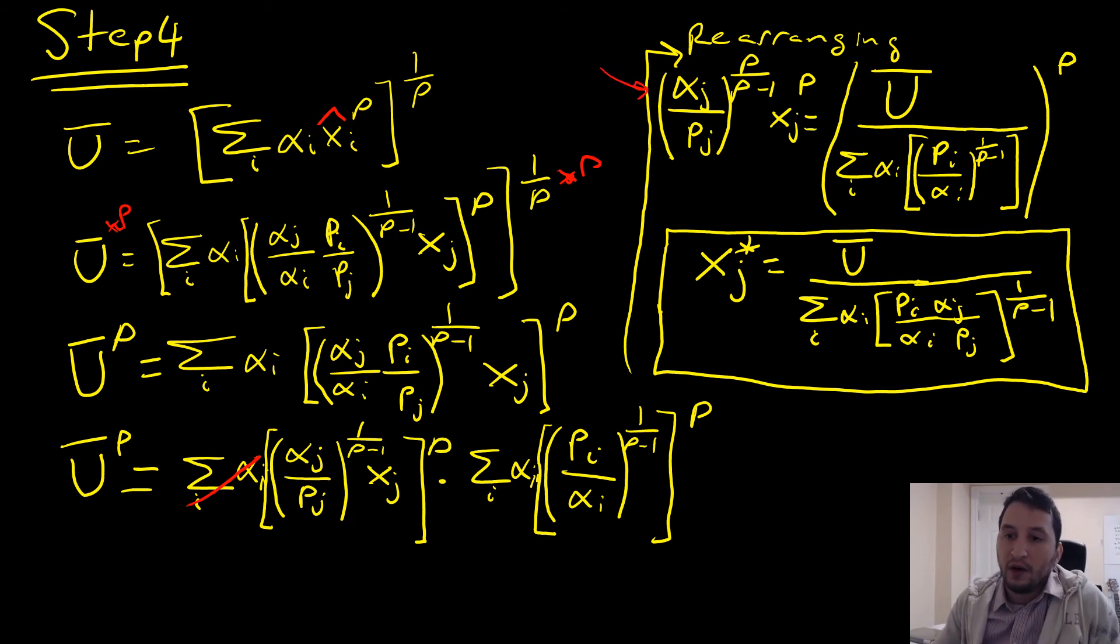from here we could then play some more games by dividing out a rho here, right? Dividing out a rho and this is also going to be dividing out a one over a rho and that's going to be what gives us the power to solve for our Hicksian demand for good j,